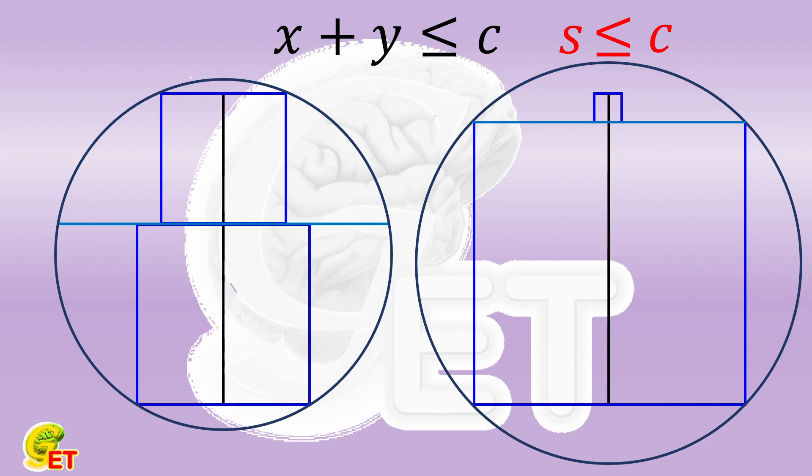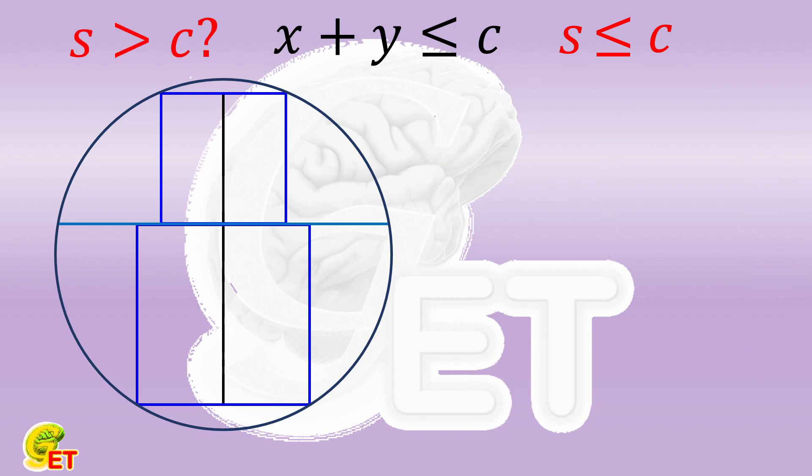The first case needs to be calculated step by step. If its result is bigger than c, it is the final answer to the question. Otherwise, the final answer would be the c in the second case. Now let's go back to the first case.